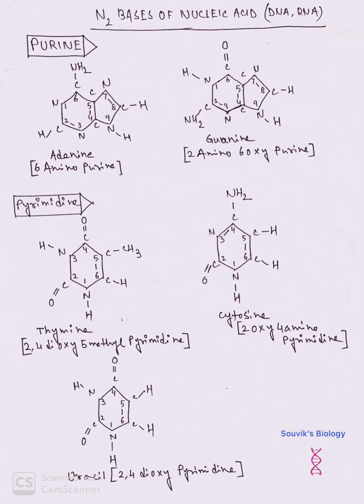The third one is uracil. The chemical name of uracil is 2,4-dioxy pyrimidine, meaning in the second and fourth carbon positions, oxygen groups are present. The difference between thymine and uracil structure is that thymine has 2,4-dioxy 5-methyl pyrimidine, and uracil has 2,4-dioxy pyrimidine. Only the 5-methyl group is absent in the case of uracil.